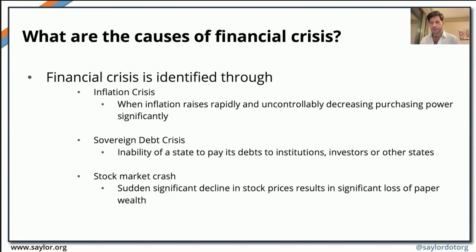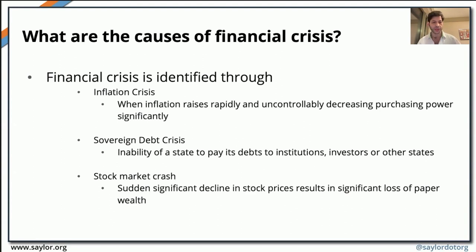There are also other causes for financial crises. One is inflation crisis, which happens when you have rapidly rising inflation rates at an uncontrollable level, basically leading to a decrease in purchasing power. Another cause is sovereign debt crisis, which is when a government or country is unable to meet its financial obligations towards governments, financial institutions, or other investors it owes money to — it is unable to repay the debt it owes. And as we've looked at, stock market crashes can also lead to a financial crisis.